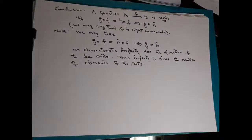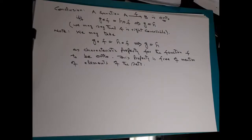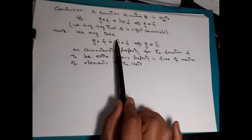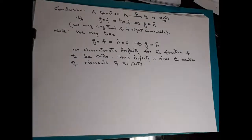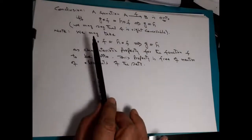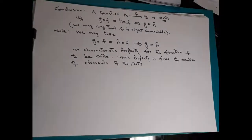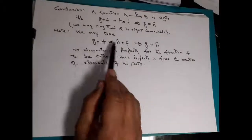The function f is an onto function, and note that in saying so we have not mentioned any element of the domain or any element of the co-domain. So if a function satisfies this particular property, then that function is an onto function. This characteristic property does not mention elements of the domain or elements of the co-domain. So we have obtained a condition for a function to be onto without mentioning elements of the sets.